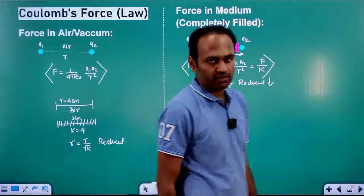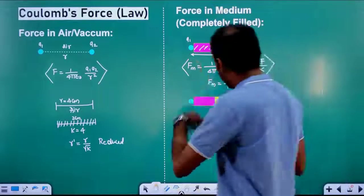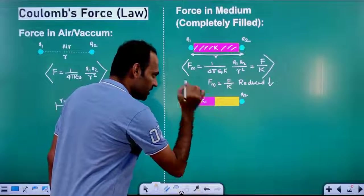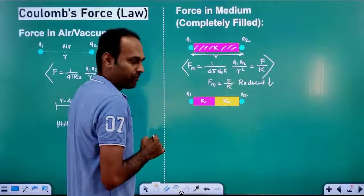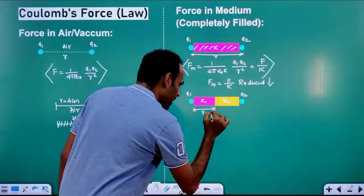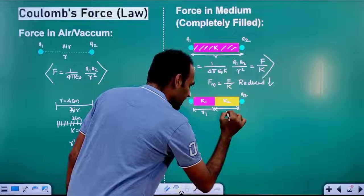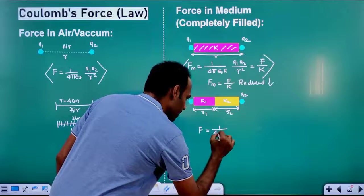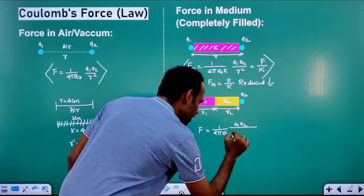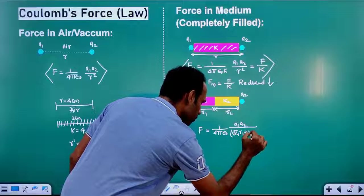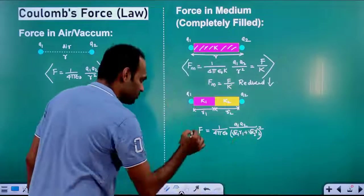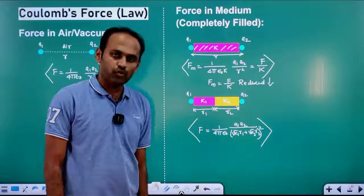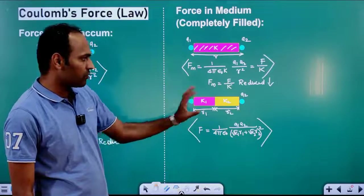Now, suppose we have two charges and we substitute two dielectric mediums. The first dielectric has constant K1 and thickness R1, and the second dielectric has constant K2 and thickness R2. The force between these two charges will be equal to 1 divided by 4π ε₀, Q1 into Q2 divided by (√K1 · R1 + √K2 · R2) whole squared.